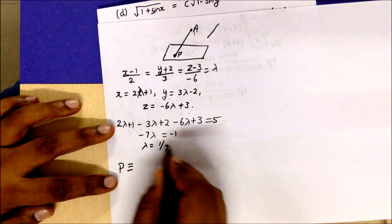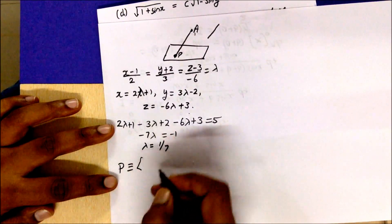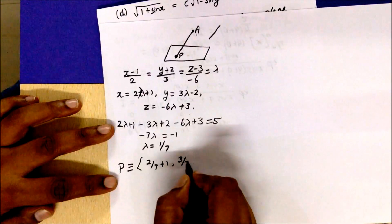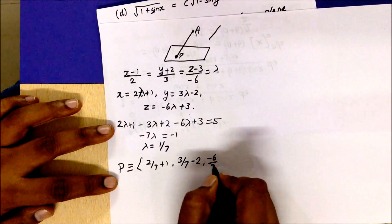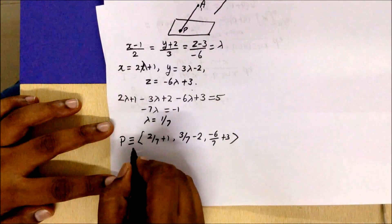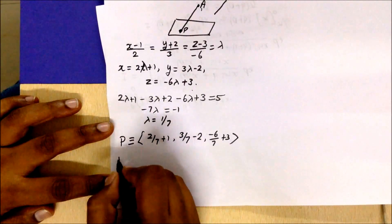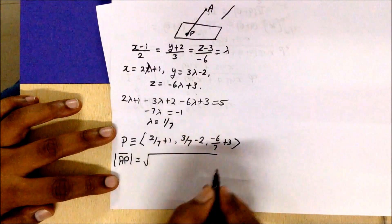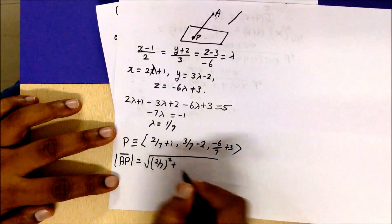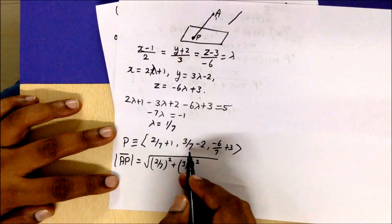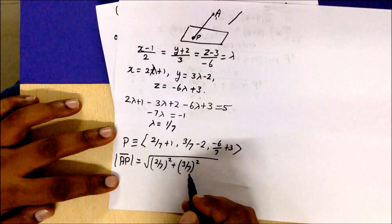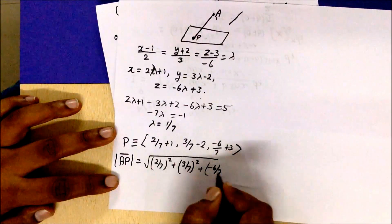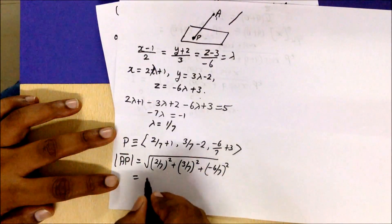Now with point P and point A both known, the distance AP = √[(2/7)² + (3/7)² + (−6/7)²]. Solving this gives the value 1.